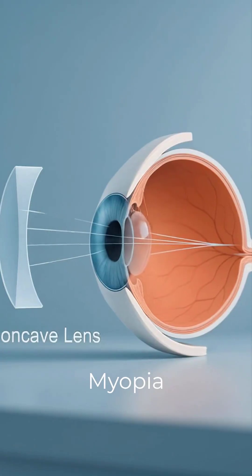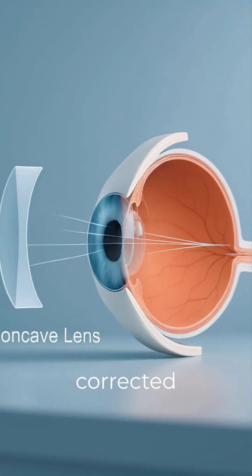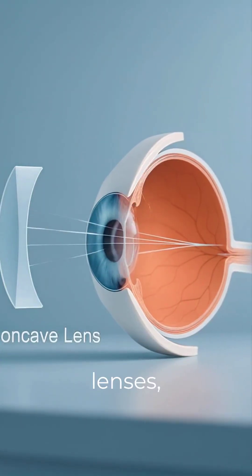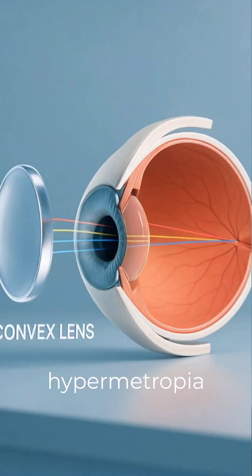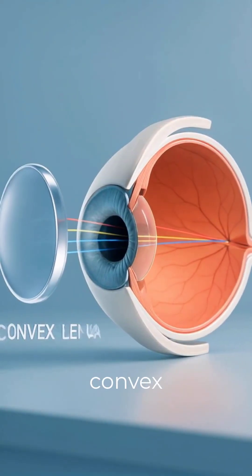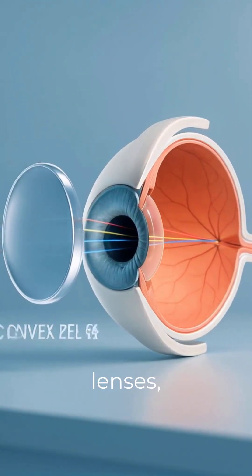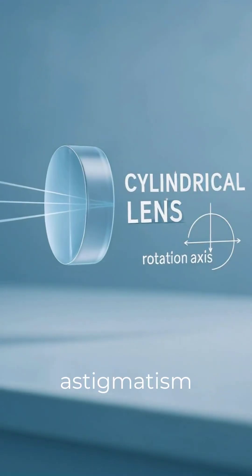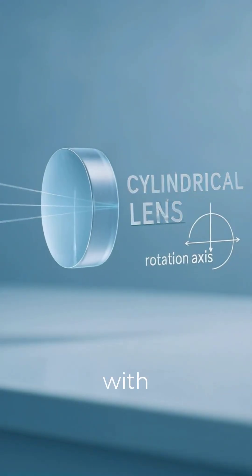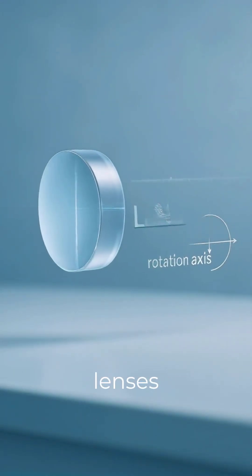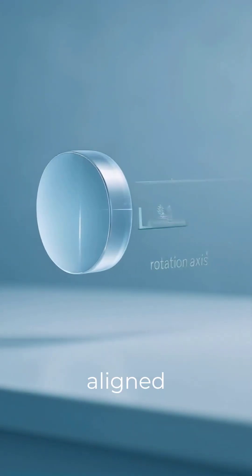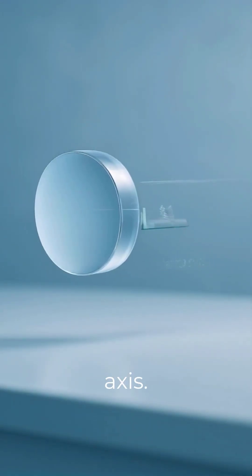Myopia is corrected with concave lenses, hypermetropia with convex lenses, and astigmatism with cylindrical lenses aligned to the axis.